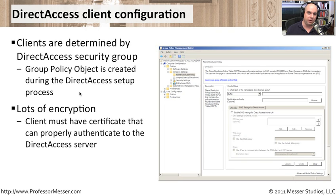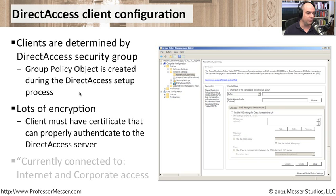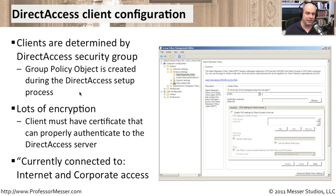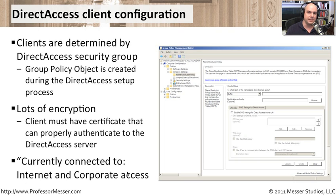That's a very important part of the setup process — communicating to that server across the network with everyone trusting each other to perform that configuration. When you finally connect with an end user and look at their network configuration, the client will see a message that says 'Currently connected to: Internet and Corporate Access.' That tells them direct access is working properly and they've connected through the tunnel.